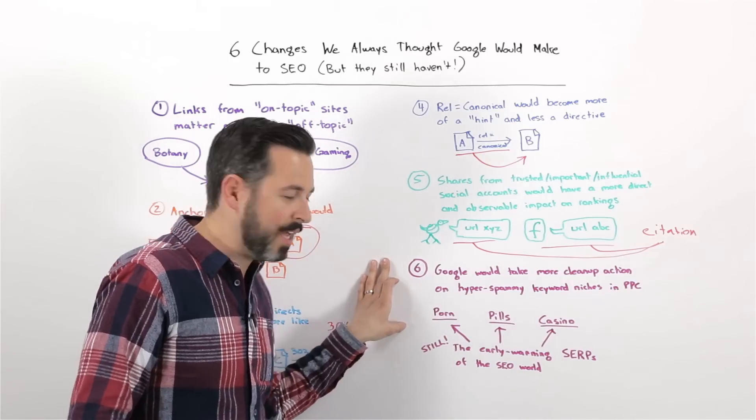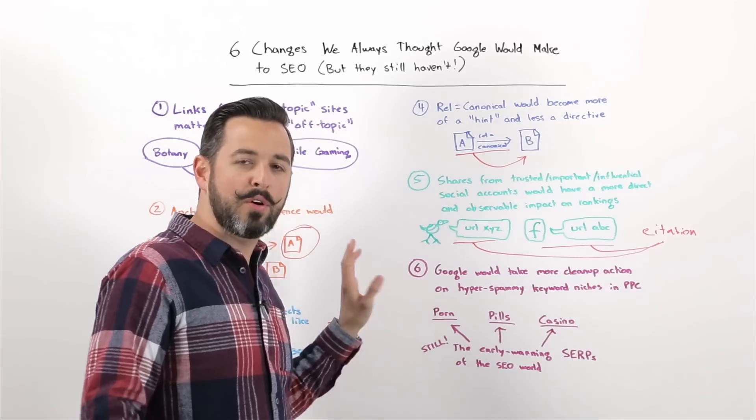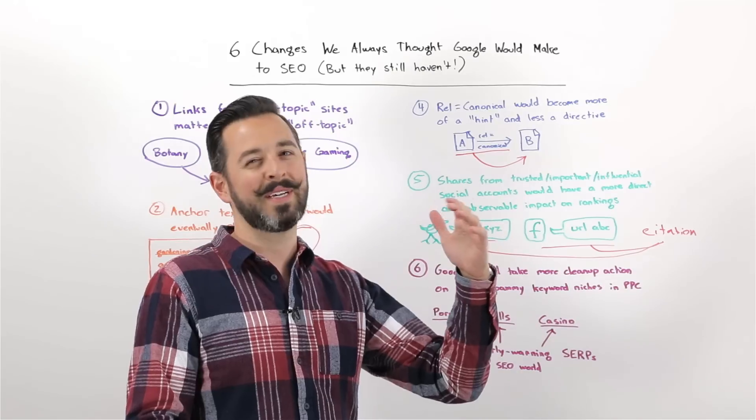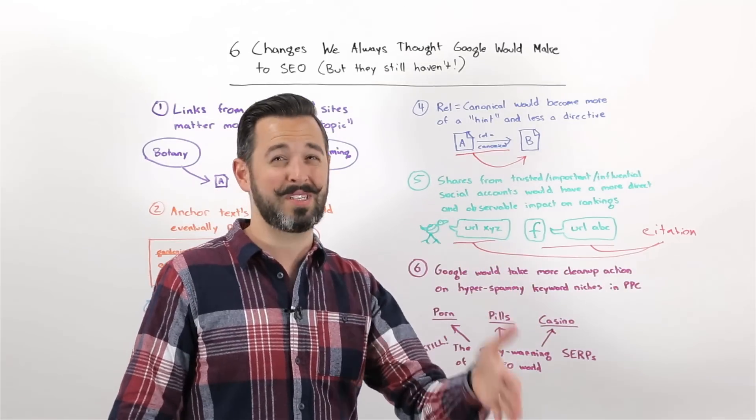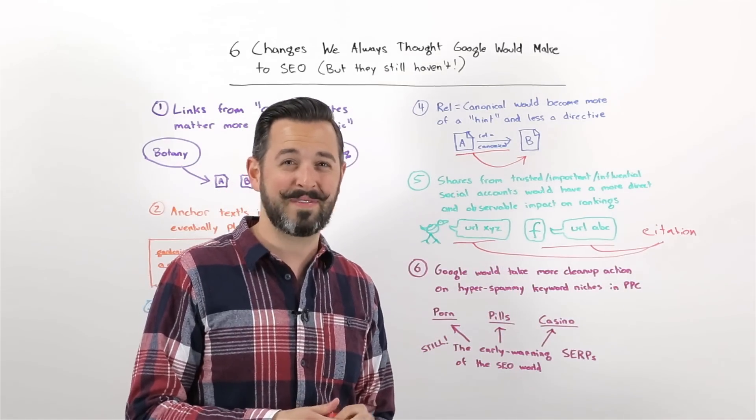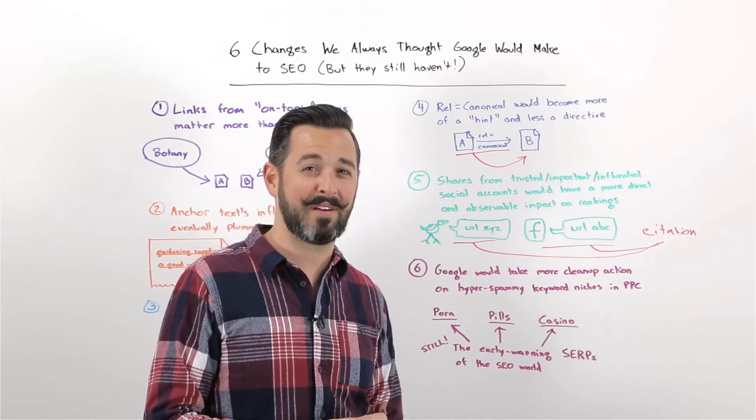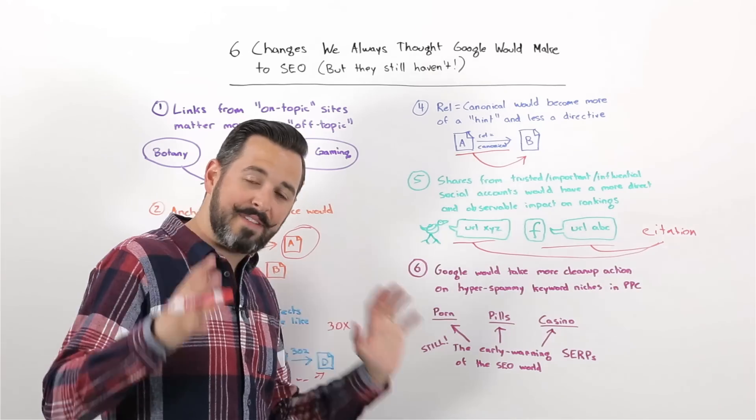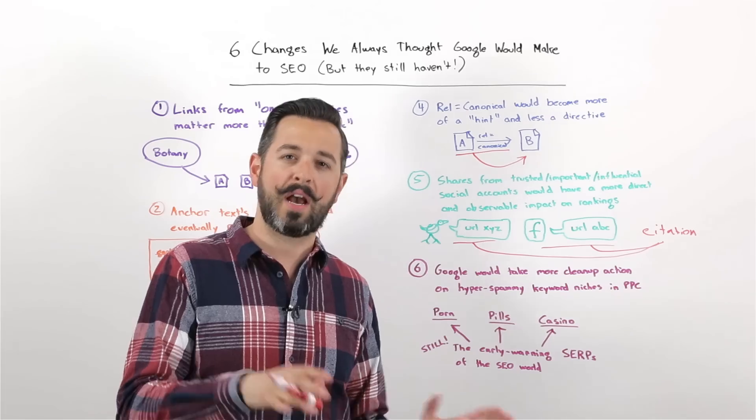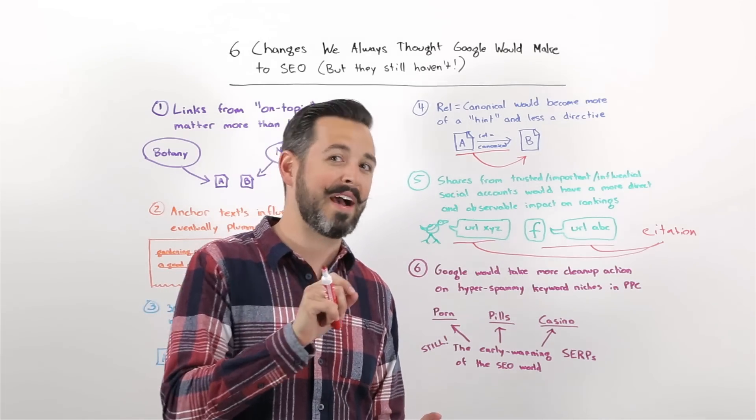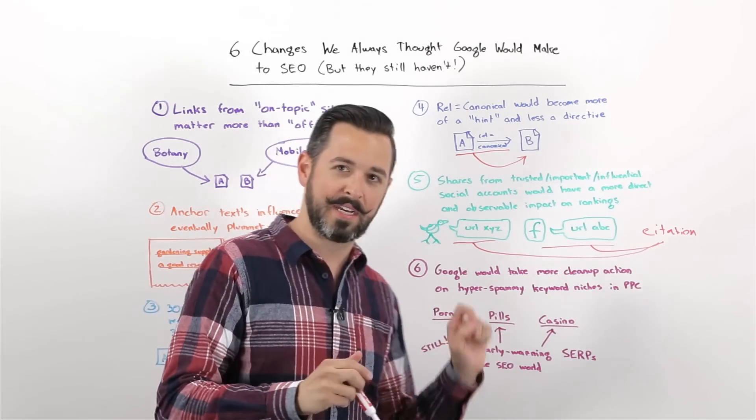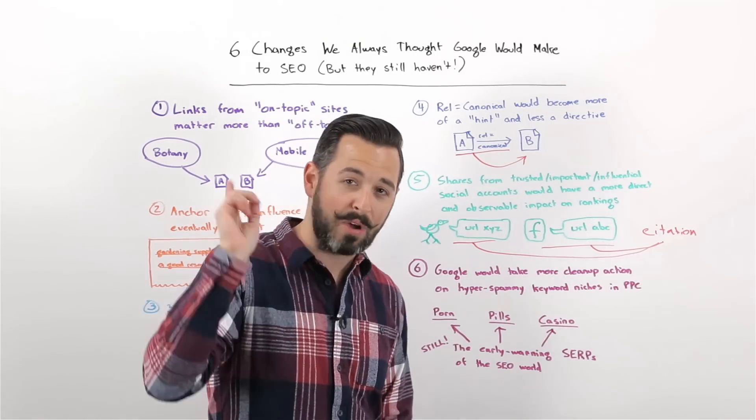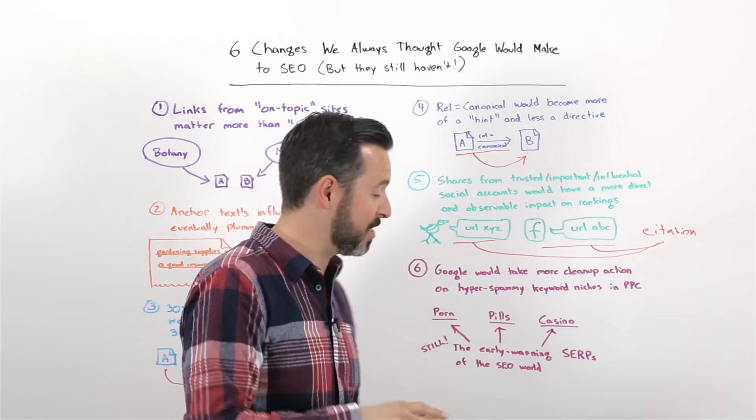Number six, last one. I think a lot of us felt like as Google was cleaning up web spam, for a long time they talked about cleaning up web spam from about 06, 07 to about 2011, 2012, it was pretty sketchy. It was tough. And when they did start cleaning up web spam, I think a lot of us thought, well, eventually they're going to get to PPC, too. I don't mean pay-per-click. I mean porn, pills, and casino.